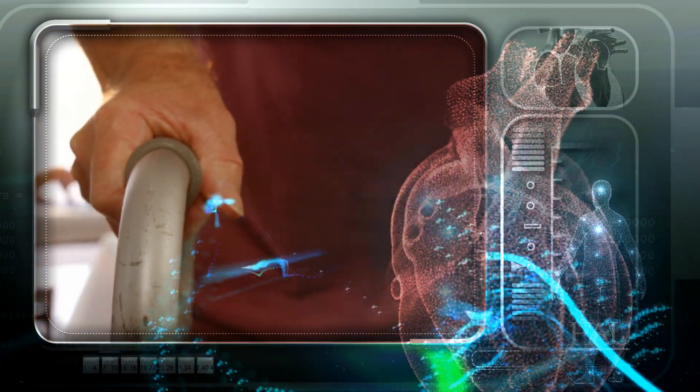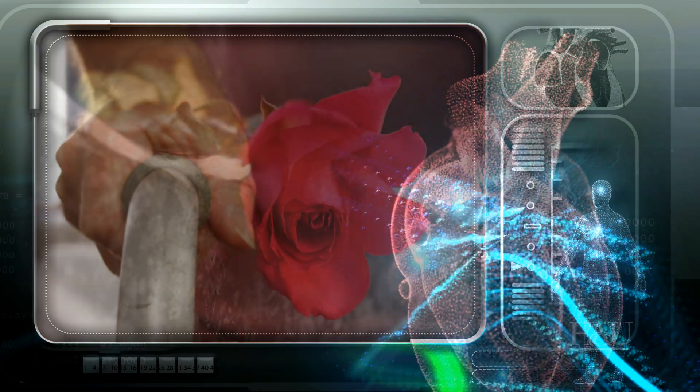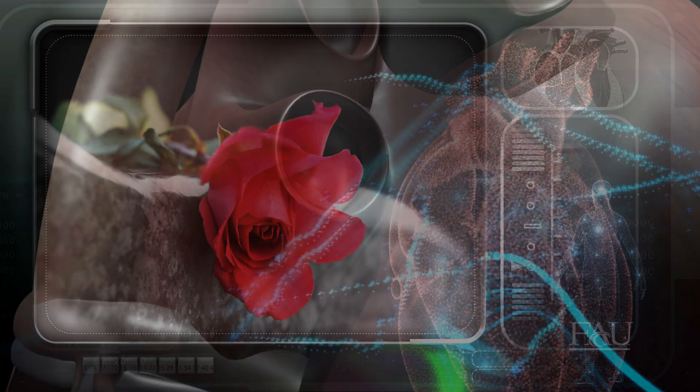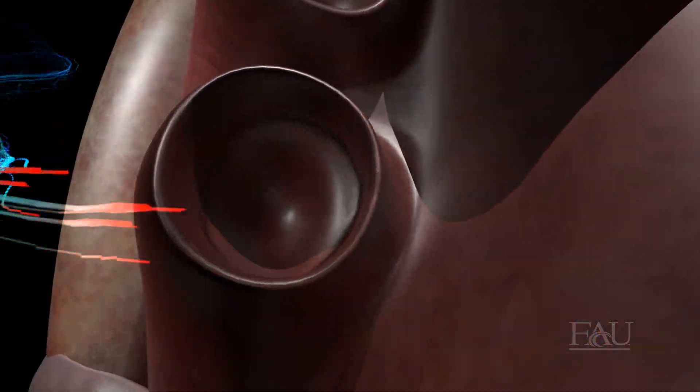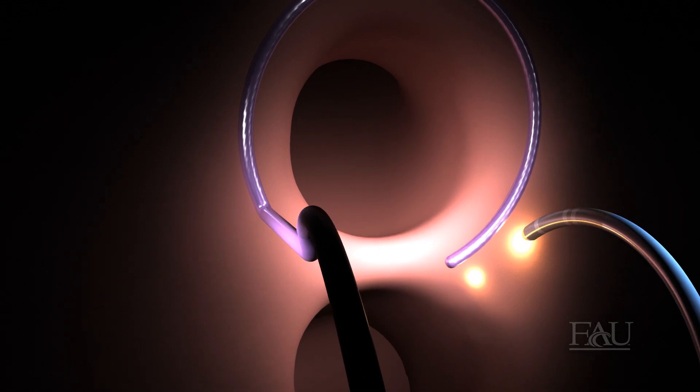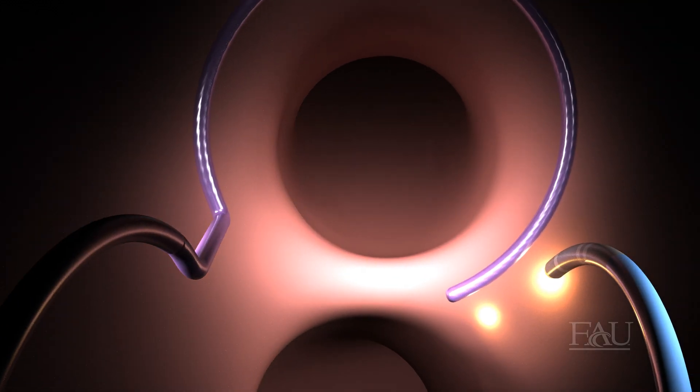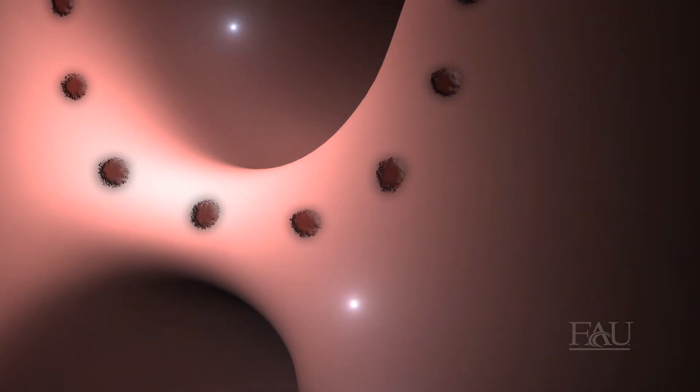The primary treatment, called AF ablation, tries to block these spastic signals by cauterizing heart tissue. Unfortunately, it only works about half the time, mainly because it treats all patients the same and doesn't address their individual therapeutic needs.